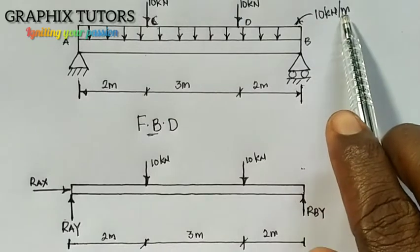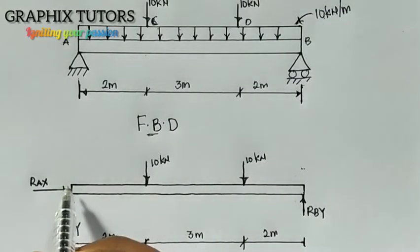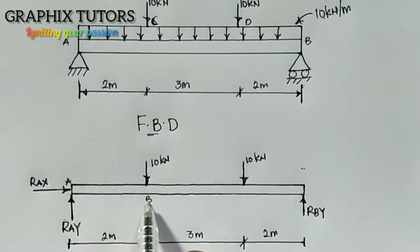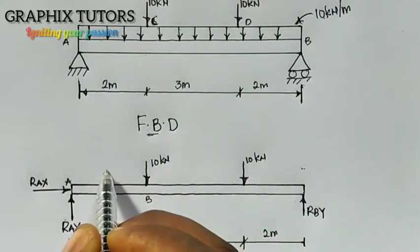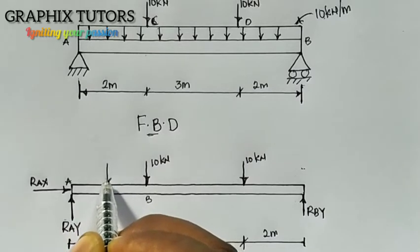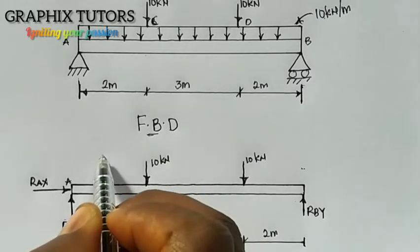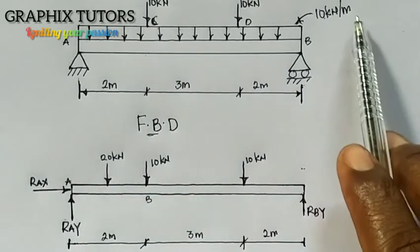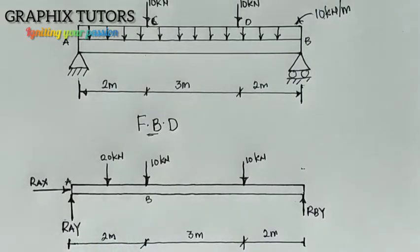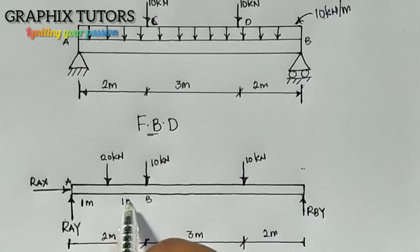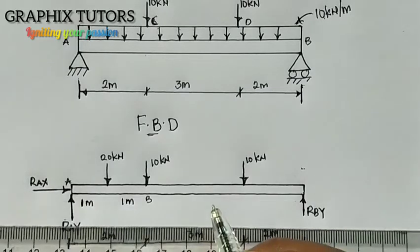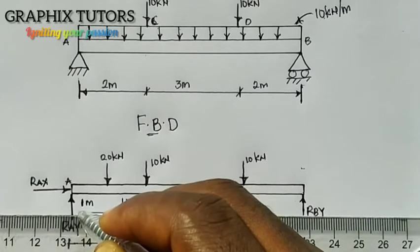The 20 kN will not be acting at the ends but at the middle of the 2-meter span — that is, at 1 meter from A. So we write 20 kN acting at 1 meter from A, with 1 meter on each side of it. That is how we convert the UDL for the AB section into a point load acting at the center.